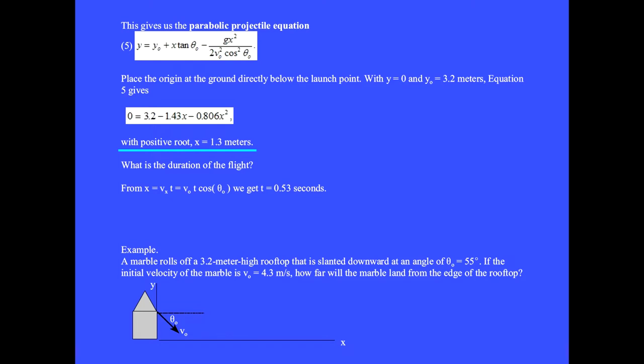What is the duration of the flight? From x equals vₓt equals v₀t cosine θ₀, we get t equals 0.53 seconds.